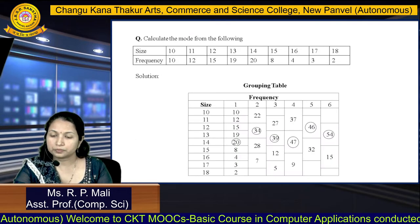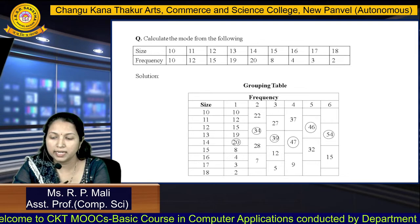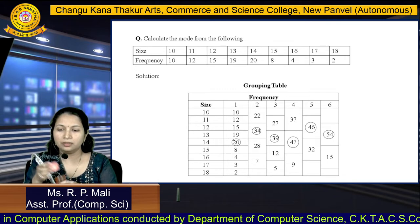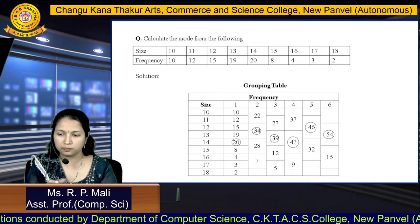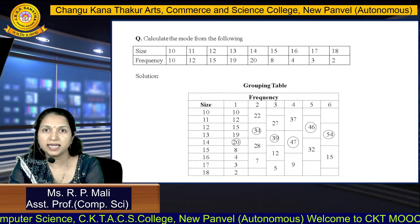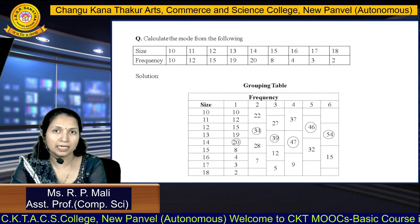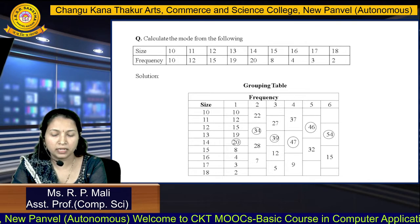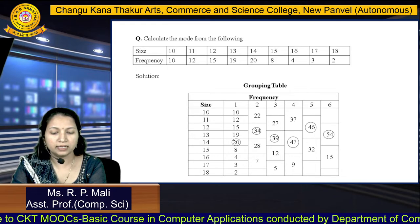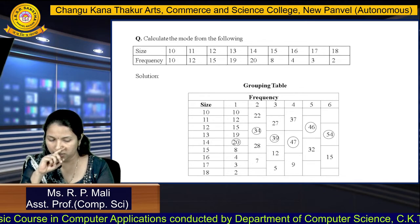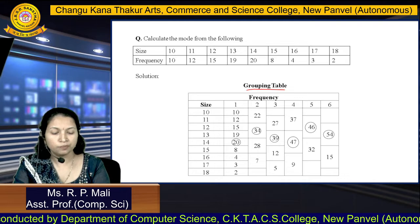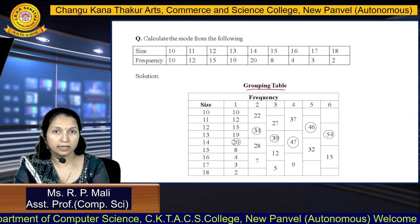Now, how to find the mode for the discrete series. This is the example for your discrete series. You have two columns: size and frequency. The sizes are 10, 11, 12, 13, 14, 15, 16, 17, 18 and the frequencies are 10, 12, 15, 19, 20, 8, 4, 3, and 2. First, we are going to draw a grouping table with 6 columns, writing the sizes in the margin.